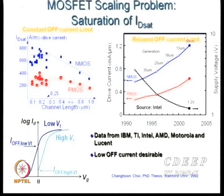New technologies are required whenever users ask for something different. Device researchers develop models and create new technologies to meet those specifications. Data from Intel, IBM, AMD, Motorola and others shows that as dimensions are scaled below 100 nm, the on-current saturates — so speed cannot be improved simply by further scaling.